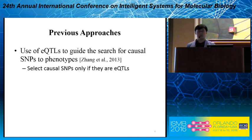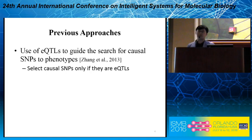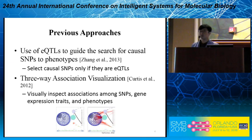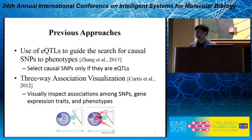There are previous approaches to address a part of this problem. For example, Zhang et al. proposed to use eQTLs to guide the search for causal SNPs to phenotypes — they first perform association mapping between SNPs and phenotypes, then choose SNPs only if the SNP is also an eQTL. Another approach was from Curtis et al., who developed a tool for three-way association visualization showing SNPs, gene expression traits, and phenotypes, and their associations. However, to our knowledge, there is no systematic method that can model complex biological mechanisms between SNPs and phenotypes.